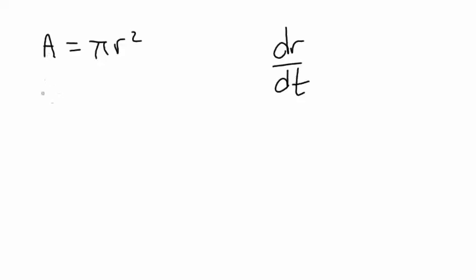So we take the derivative of A and that's one. Sure it is. And then we write dA/dt. And now we take the derivative of this with respect to t. Take the derivative of r. We bring the two out front. 2 pi r times dr/dt.